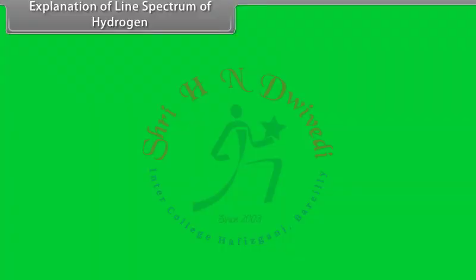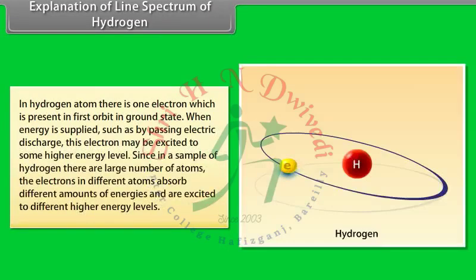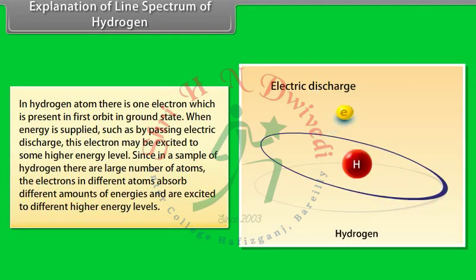Explanation of line spectrum of hydrogen: In a hydrogen atom, there is one electron present in the first orbit in the ground state. When energy is supplied, such as by passing electric discharge, this electron may be excited to some higher energy level. Since in a sample of hydrogen there are a large number of atoms, the electrons in different atoms absorb different amounts of energy and are excited to different higher energy levels.